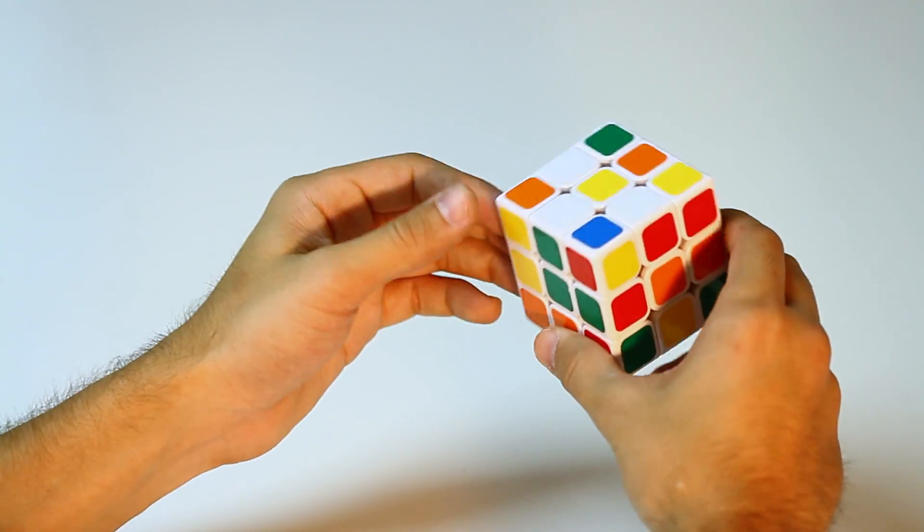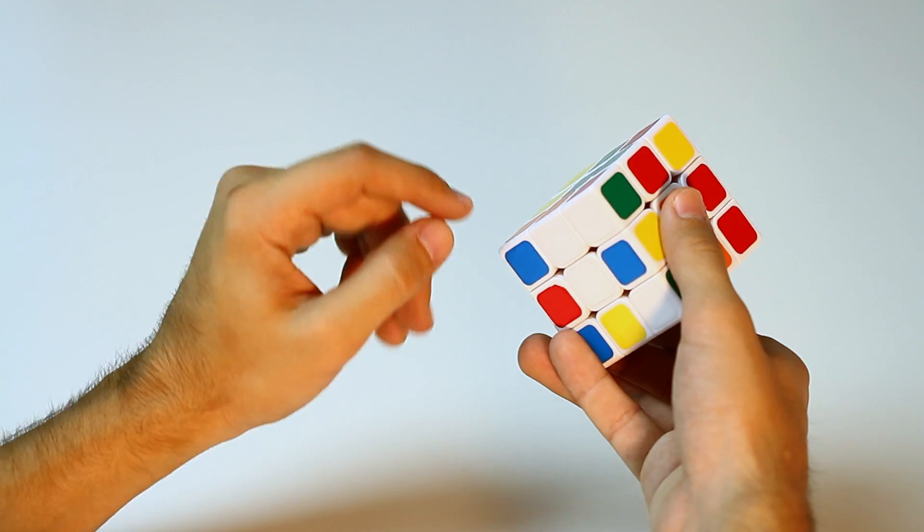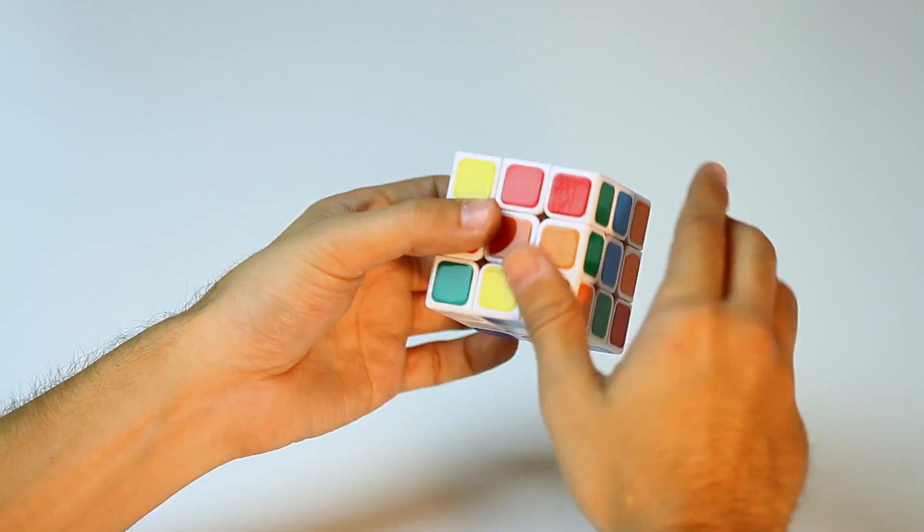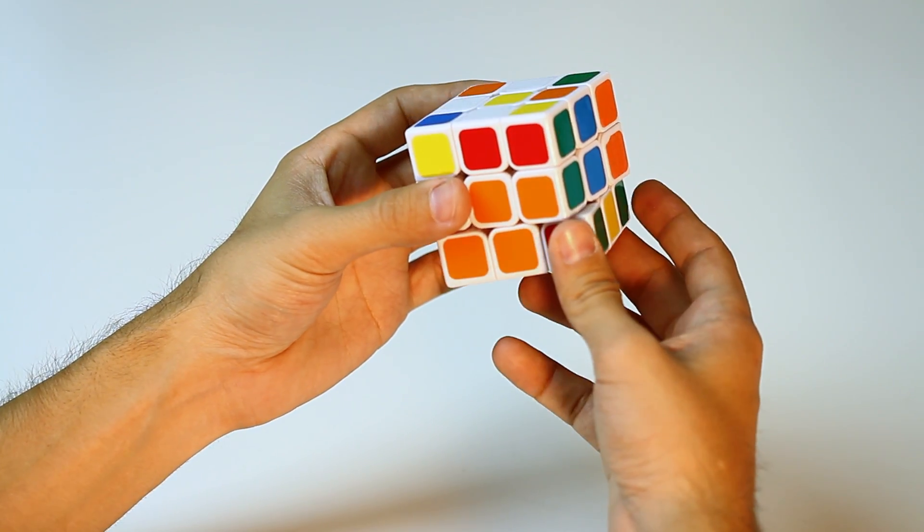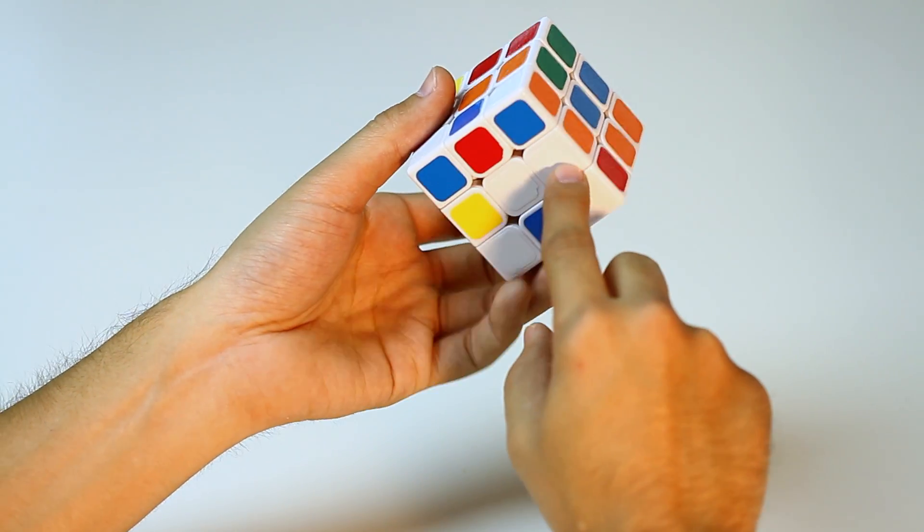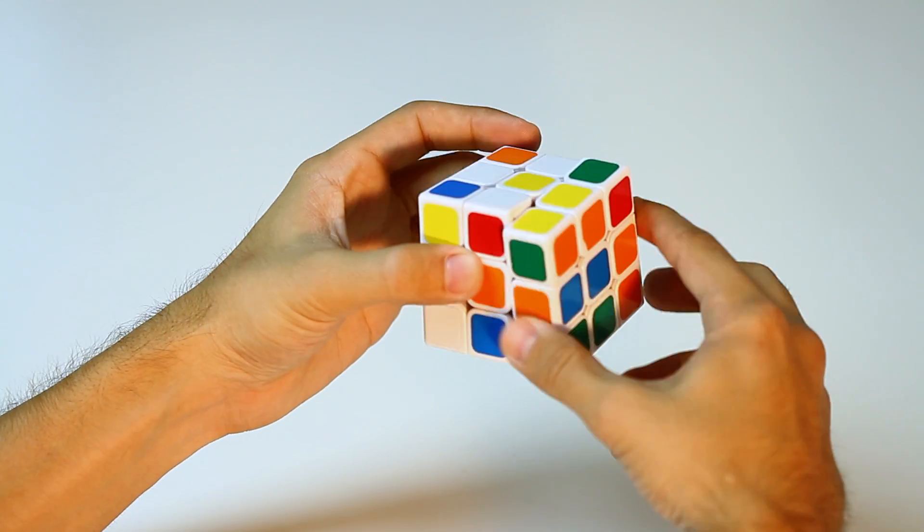Now we just have one more piece left. So the edge piece is right here on the bottom. So when they're on the bottom, it's pretty simple. You just have to rotate the edge piece to the side that it's supposed to go on, just right beneath it. So you could do 180 degrees, and then it'll go right into position.